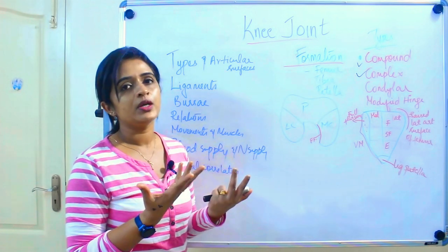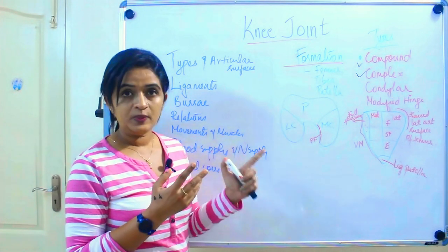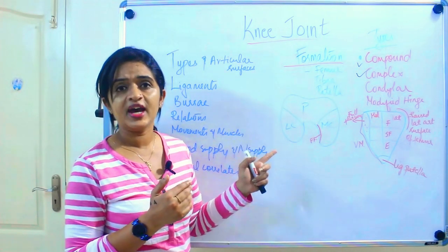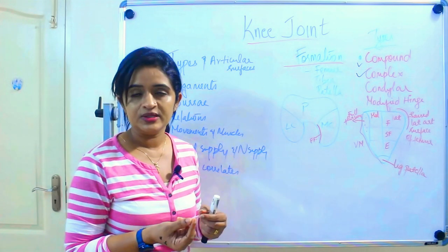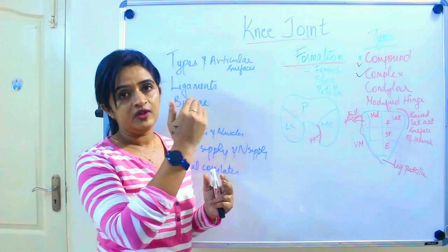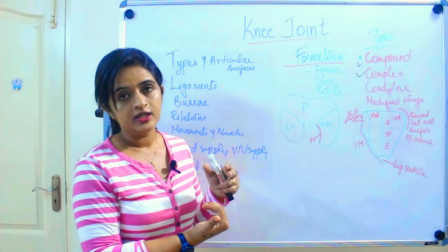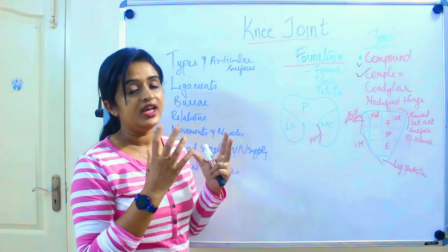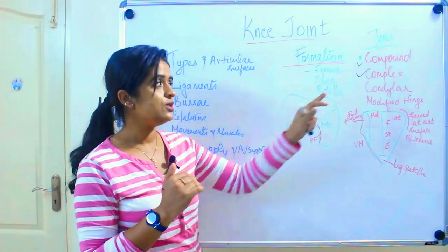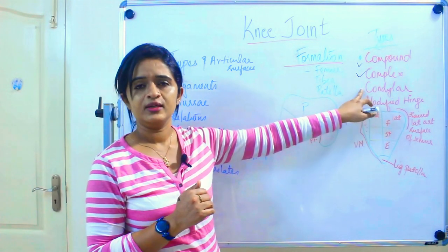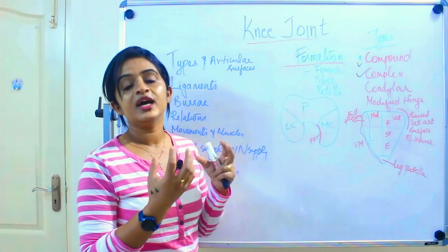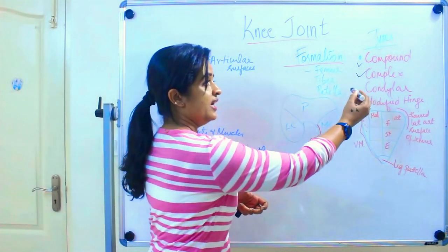A simple synovial joint is not called complex unless its single cavity is subdivided. In the knee joint, the fibrocartilaginous medial and lateral menisci divide the entire cavity into a meniscofemoral compartment (near the femur) and a meniscotibial compartment (near the tibia). Hence it is called a complex joint. It is also called a condylar joint because the condyles of the femur articulate with the condyles of the tibia.